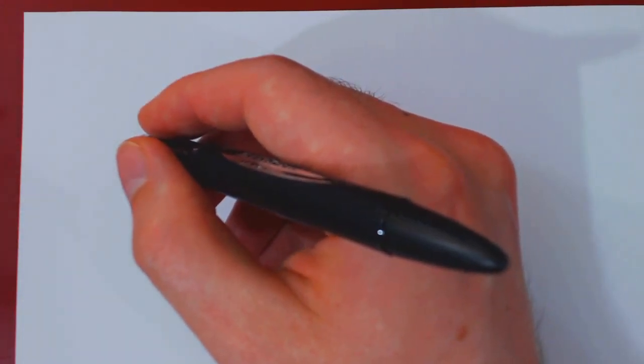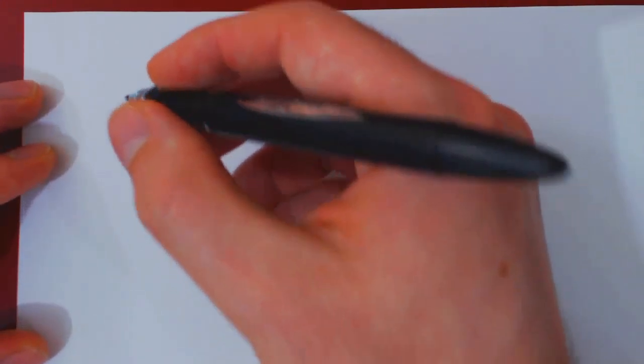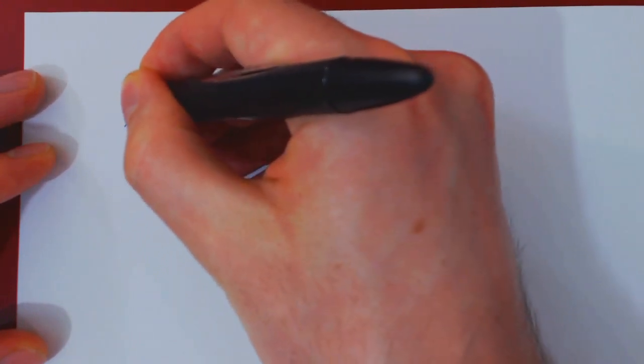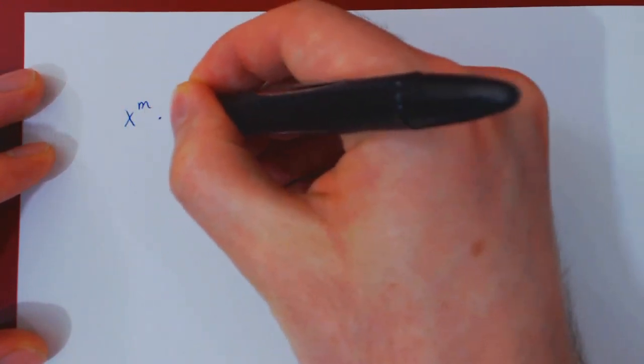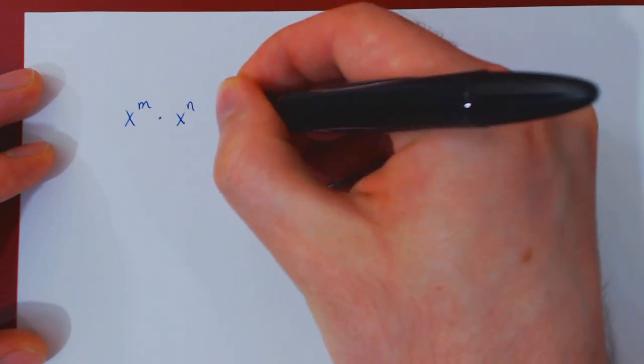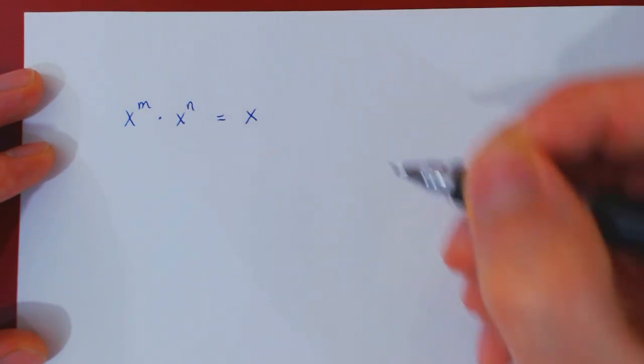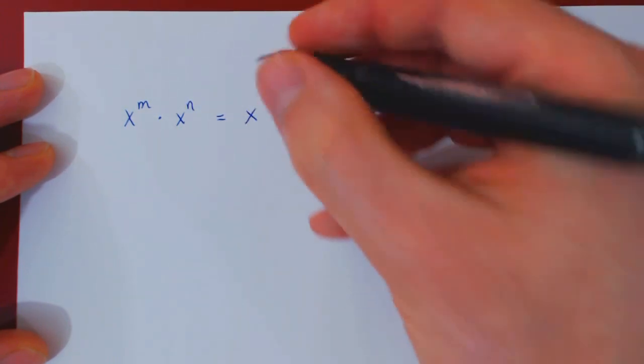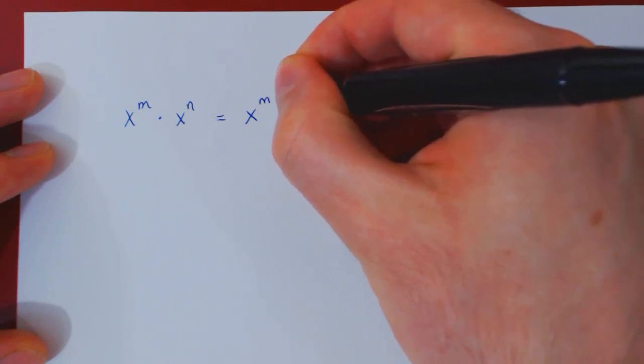Okay, so in this video, we want to review a basic property of exponents, which is the following. So if we have x to the m times x to the n, the result can be combined under a single base as x to the m plus n.